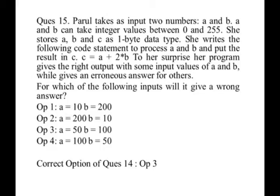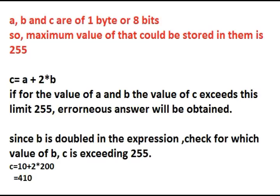It's a bit long but very simple question. Try to solve it. So here we can see that a, b, c, all are of one byte, that is eight bits. So maximum they can hold up to 255 numbers. On exceeding that, we will get an error. So here we can see the expression c equals to a plus 2 into b. This 2 into b has high impact on the expression c. So let us check for which value of b, this value of c will exceed 255. So first option, b is 200. So on putting 200, the value of c is becoming 410, which is more than 255, so it will give an erroneous result.